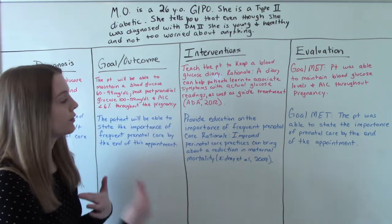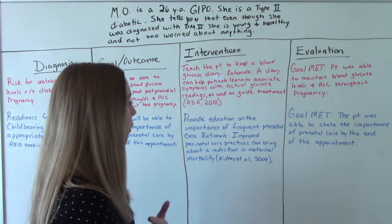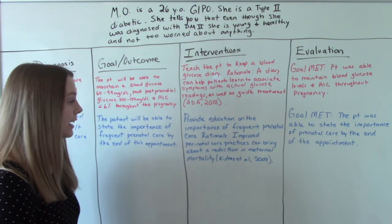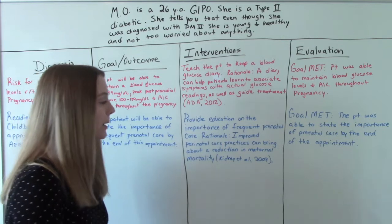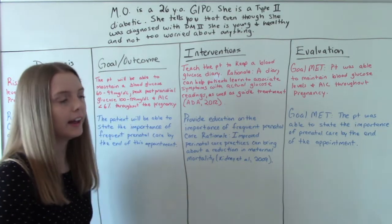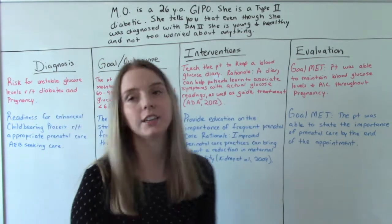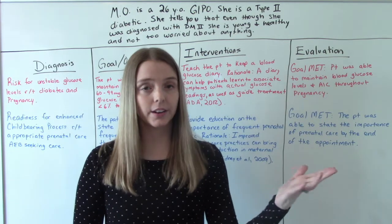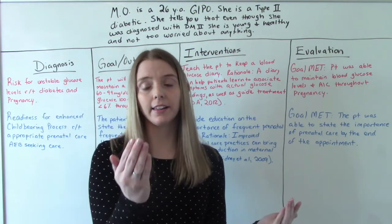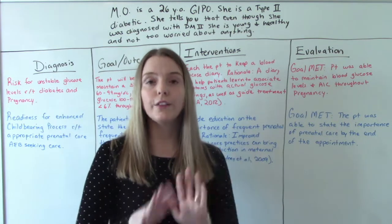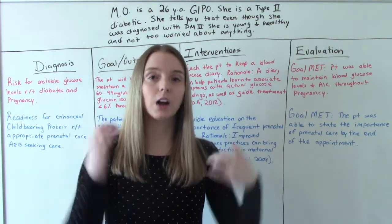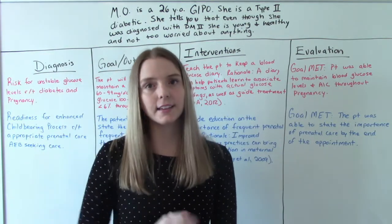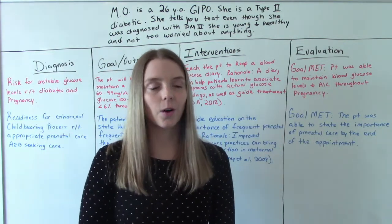Our intervention is to provide education on the importance of frequent prenatal care. Our rationale: improved perinatal care practices can bring about a reduction in maternal mortality, and that's huge. There is a big association between people who do not get adequate prenatal care and morbidity and mortality rates for mom and for baby. So it's very important that they understand it's important to come to their prenatal appointments, especially someone like her who has diabetes on top of the pregnancy.